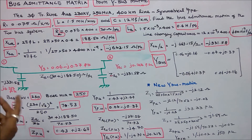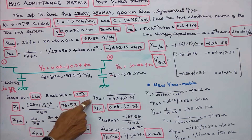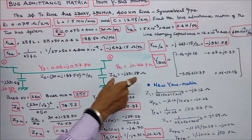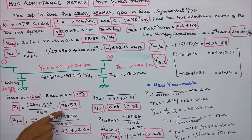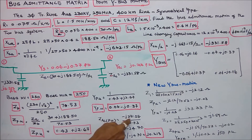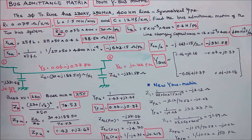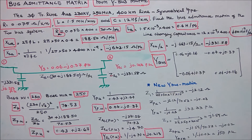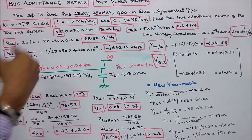Once I know the per unit impedance, I can find per unit admittance: Y_pu = 1 / Z_pu = 0.06 − j0.37 per unit. Next, the shunt capacitor impedance in per unit: −j331.58 / 70.53 = −j4.70 per unit. Therefore Y_shunt per unit = 1 / (−j4.70) = j0.213 per unit.